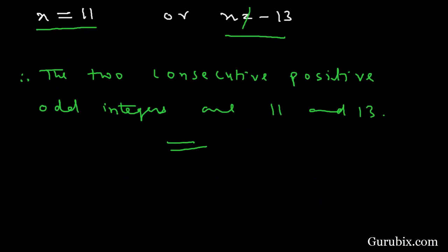This means the two consecutive positive odd integers are 11 and 13. So this is the solution of the example. Thank you.